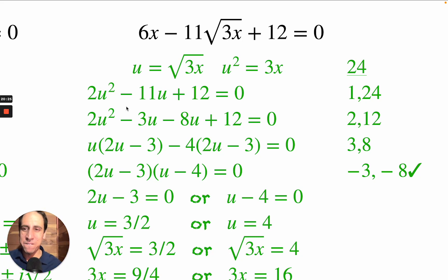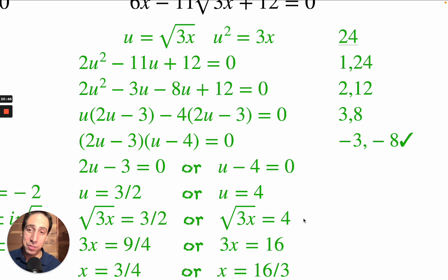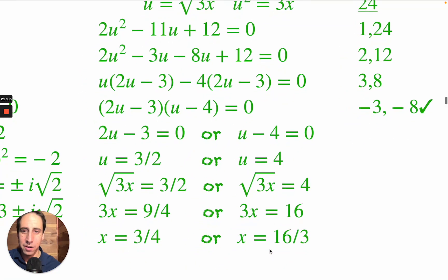We started with x and must finish with x. U equals the square root of 3x, so substitute back: square root of 3x equals 3 halves and square root of 3x equals 4. To undo a square root, square both sides. We get 3x equals 9 fourths and 3x equals 16. Dividing both sides by 3 gives the final answers.